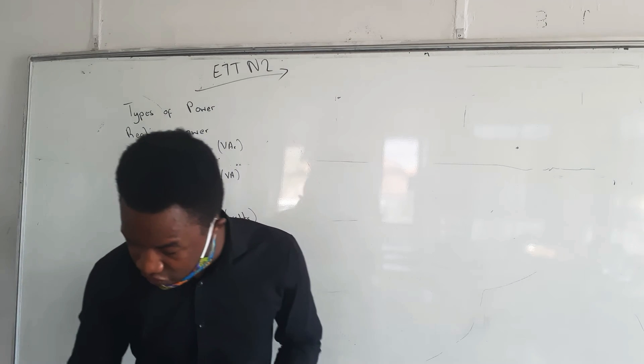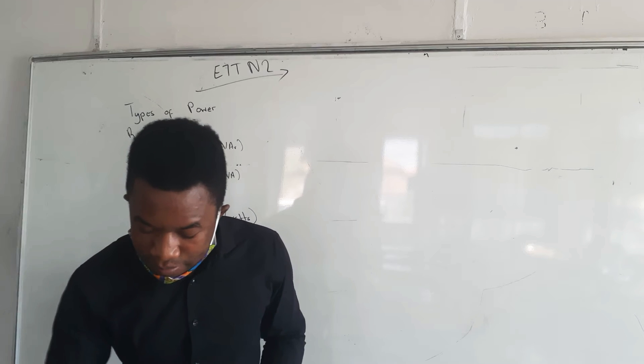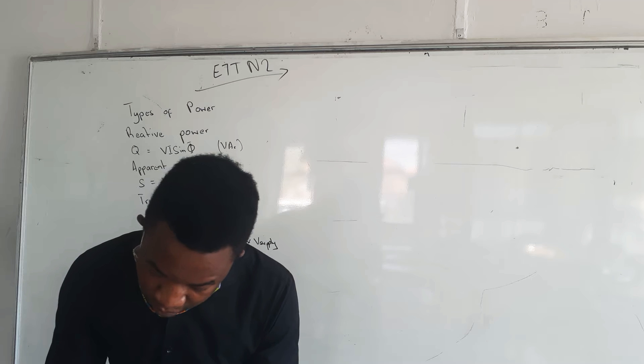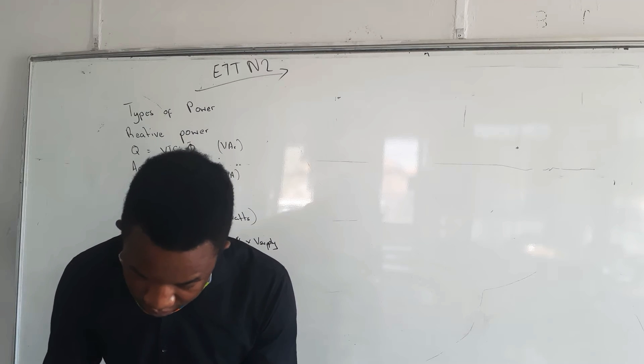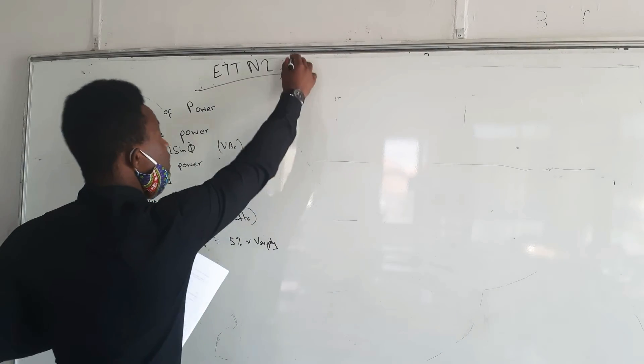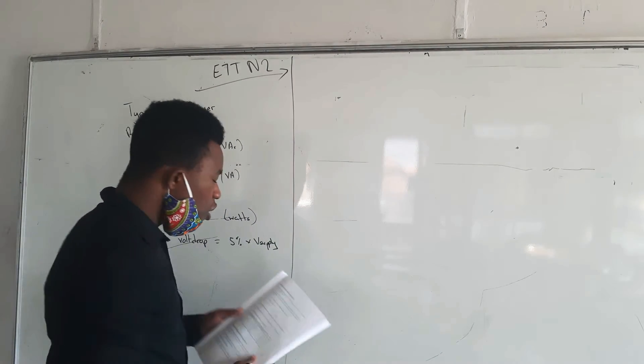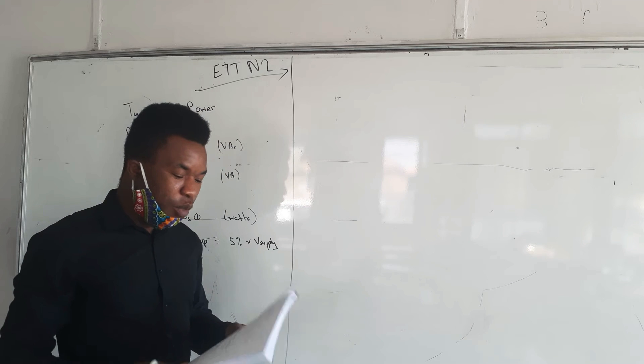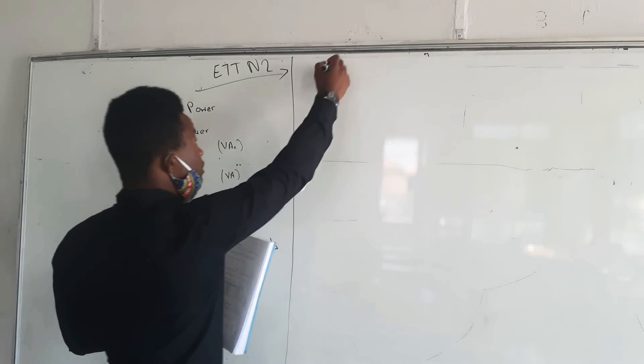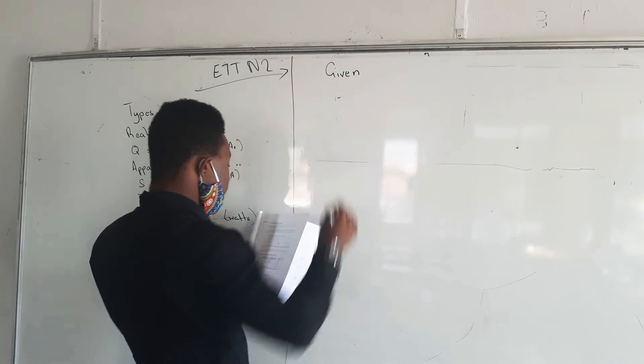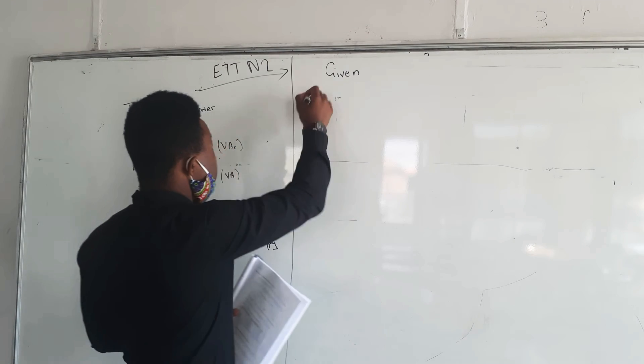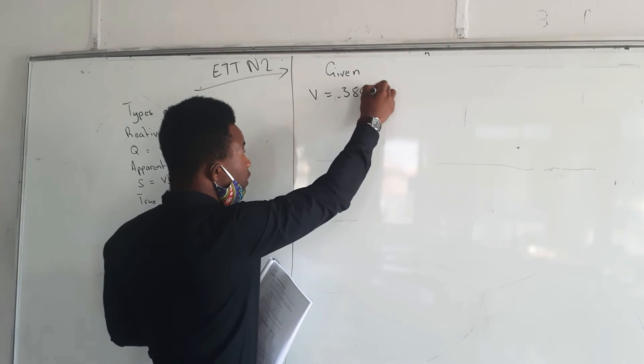Without wasting much of your time, we can do the first example that I have here from the past question paper, April 2019. I'm just going to do question 1.1. It says what line current will a 380 volts... Let us write the given information.